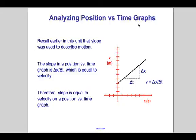Last note of graphing: when we're analyzing position versus time graphs, the slope of the line will give us some information. Recall earlier that the slope was used to describe the motion. The slope of a position versus time graph is the change in location per change in time, which is the velocity. So this slope is equal to the velocity on a position versus time graph.